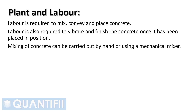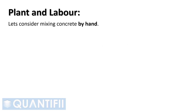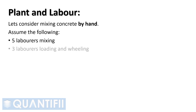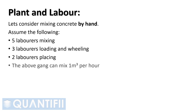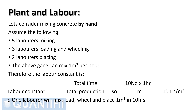Mixing of concrete can be carried out by hand or using a mechanical mixer. Let's consider mixing concrete by hand. Assume the following: 5 laborers mixing, 3 laborers loading and wheeling, 2 laborers placing. The above gang can mix 1 cubic meter per hour. Therefore the labor constant is total time divided by total production: 10 multiplied by 1 hour, divided by 1 cubic meter, equals 10 hours per cubic meter.